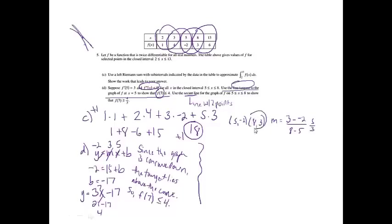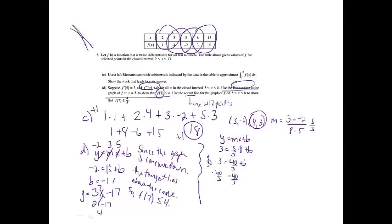To find the equation of the line, I'll pick the point (8, 3). So y equals mx plus b gives 3 equals 40 thirds plus b. Subtracting 40 thirds from both sides: 3 is 9 thirds, so 9 thirds minus 40 thirds is negative 31 thirds. That's my b. The equation of the secant line is y equals 5 thirds x minus 31 thirds.